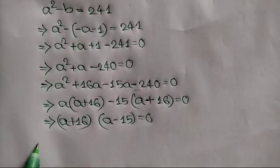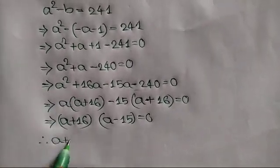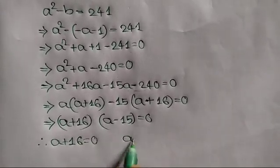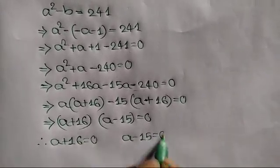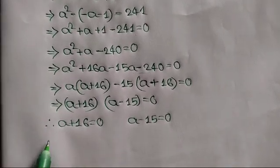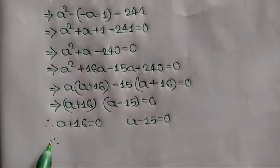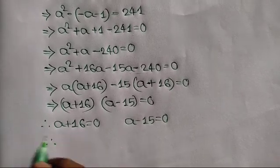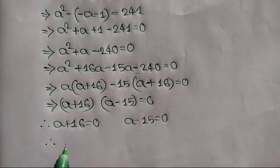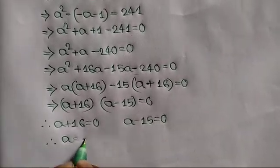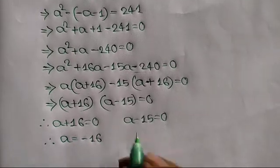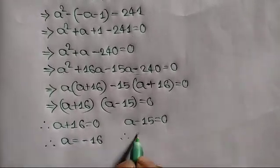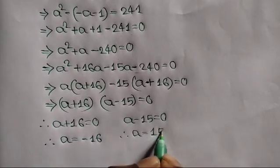Taking common A plus 16, we write A plus 16 bracket A minus 15 is equal to 0. So we can write A plus 16 is equal to 0 or A minus 15 is equal to 0. Taking 16 to the right side, the value of A is equal to negative 16, and taking negative 15 to the right side, the value of A is equal to 15.